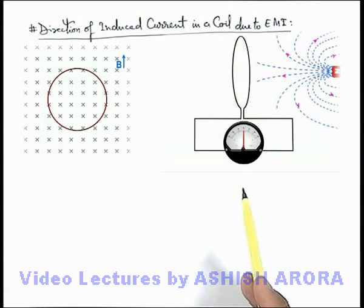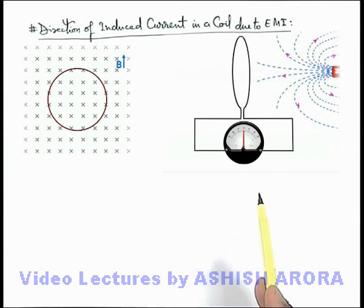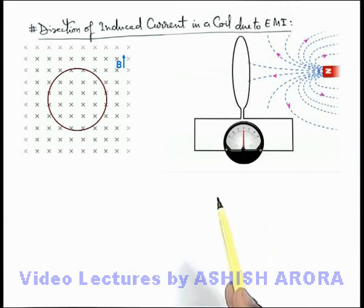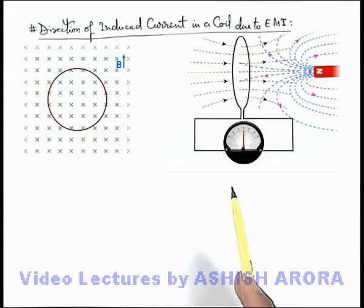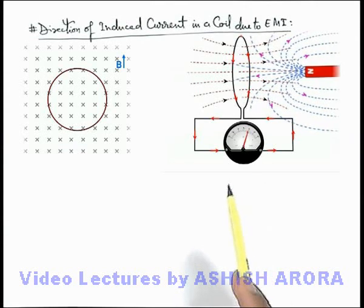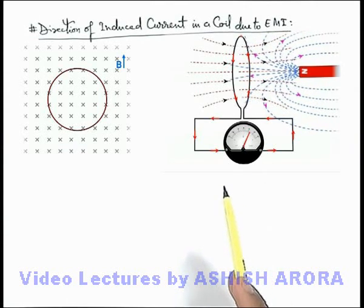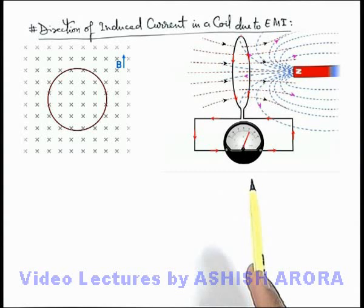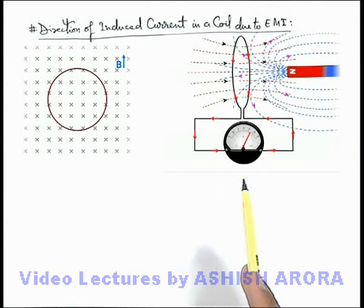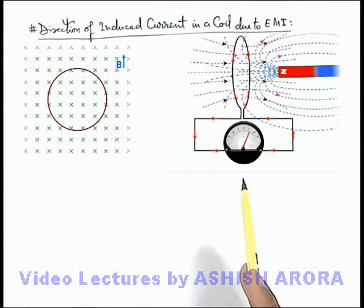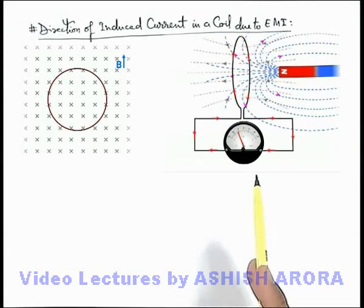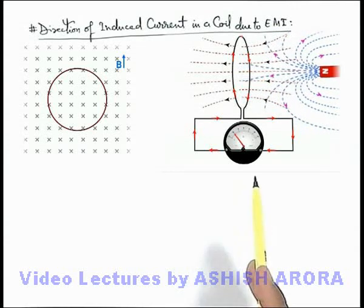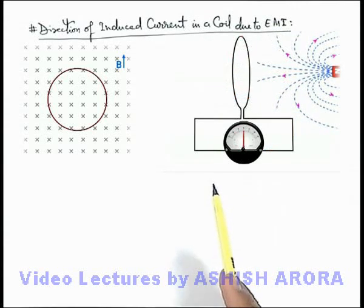As the magnet is brought close, the coil induces a current in such a way that the facing end of the coil, in front of the magnet, also behaves like a north pole and will have a tendency to repel the magnet. Since two similar poles repel each other, we can see that the motion of the magnet — which is causing the flux change in the coil — is being opposed by the induced current direction.